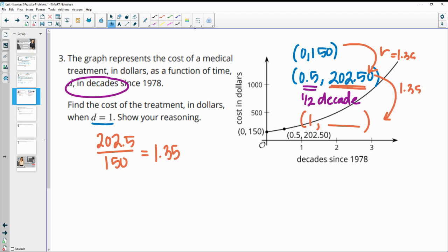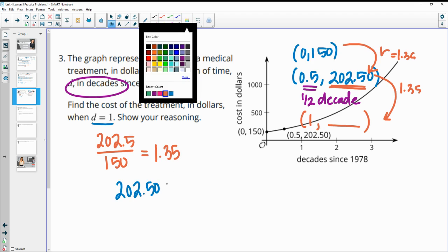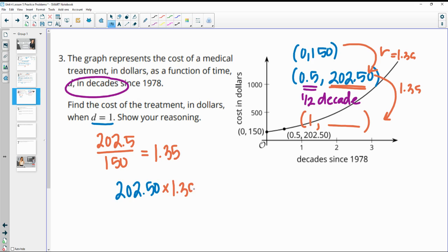So we would just need to take $202.50 and multiply that by this growth factor. And then that would give us our cost of $273.38 after one decade.